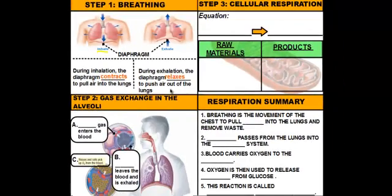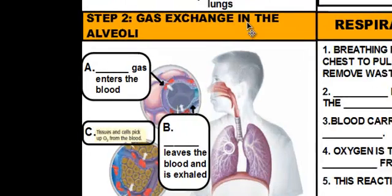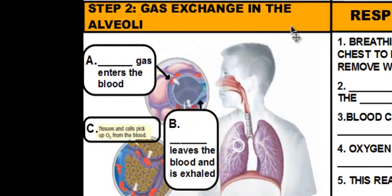So once we have the oxygen in our body, we can now move on to step two, which is the gas exchange in the alveoli. So what's going to happen is we take a deep breath and that air is going to travel all the way down through our respiratory system. And then that air is going to enter into our lungs, supplying our lungs with oxygen. Now again, as we learned in pulmonary circulation, oxygen-poor blood enters the lungs. So because there's a high concentration of oxygen in the lungs and a low concentration of oxygen in the blood, the oxygen is going to move into the blood through the process of diffusion. So oxygen gas enters the blood.